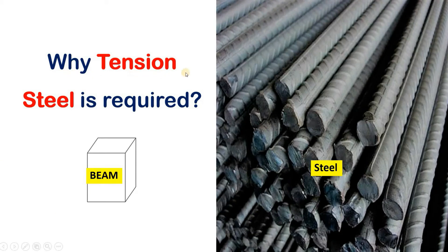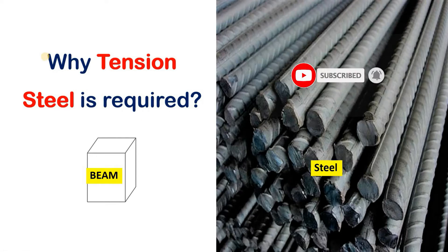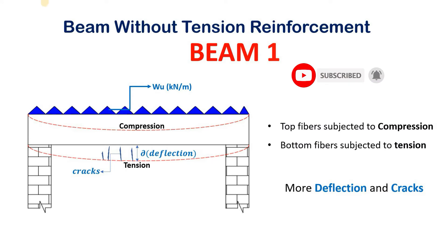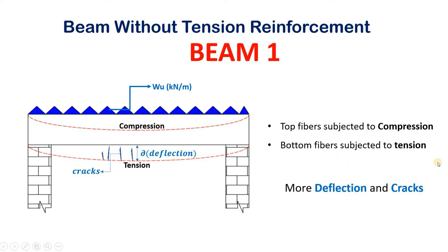Now let us talk about why tension steel is required. Let us take an example of a beam without tension reinforcement and a beam with tension reinforcement, and see how each behaves under load. Consider beam one, without tension reinforcement. When a load of wu kilonewton per meter is applied, beam one deflects and changes shape. One side of the beam is subjected to compression force and the other side to tension force — the top side is under compression.